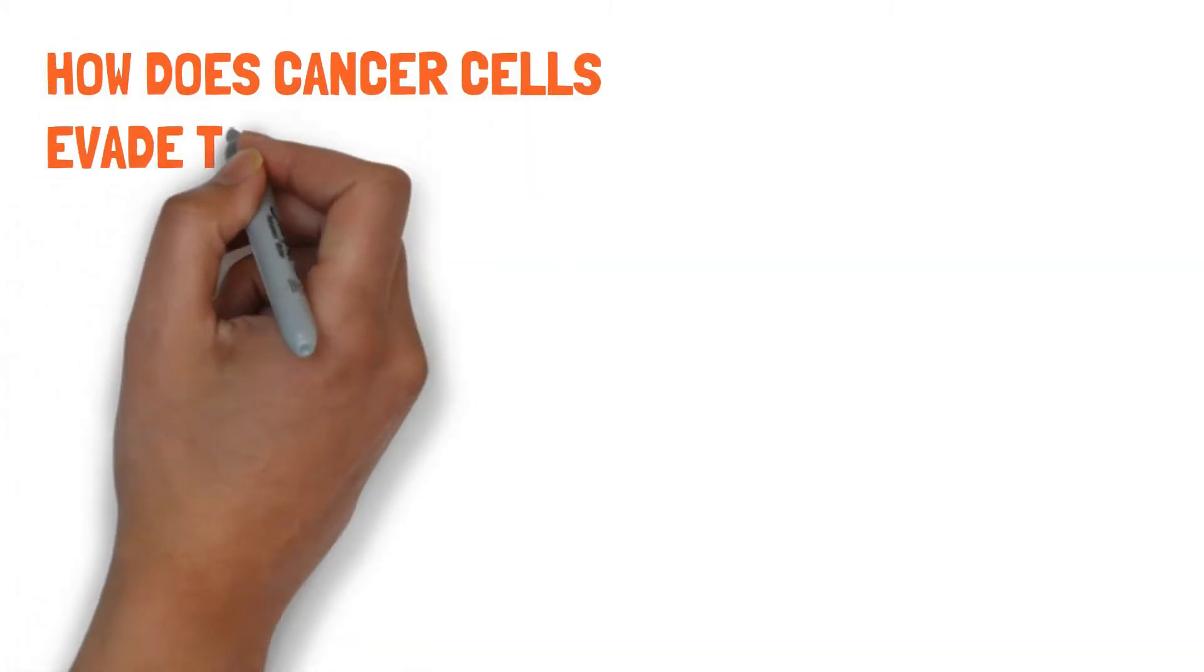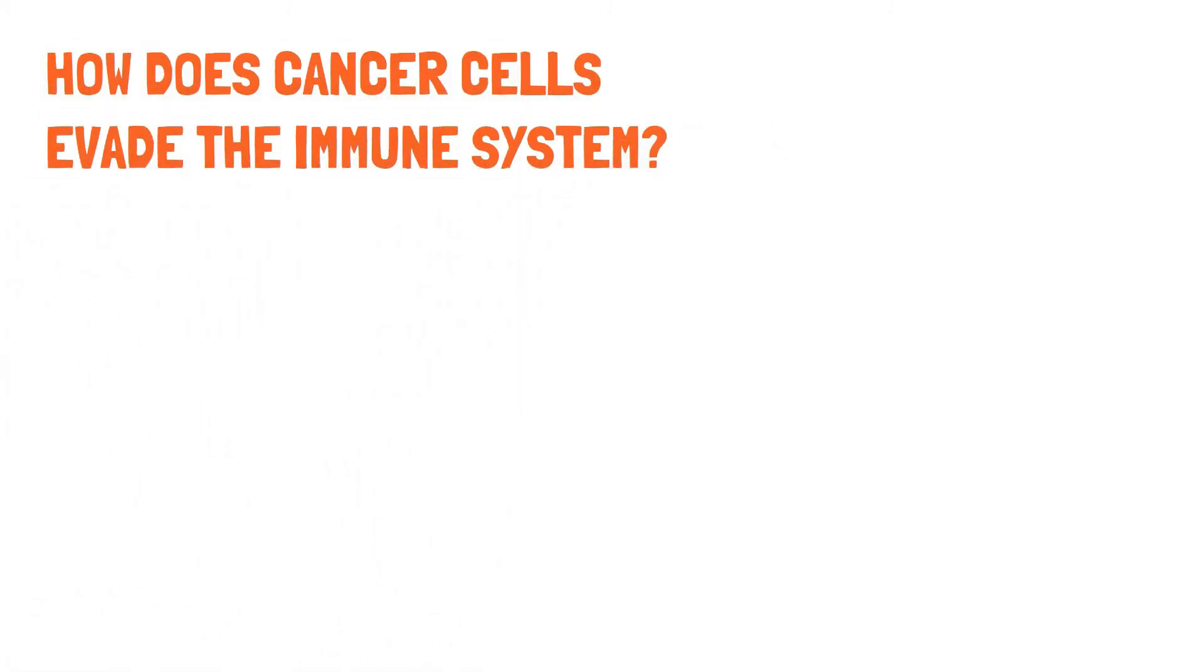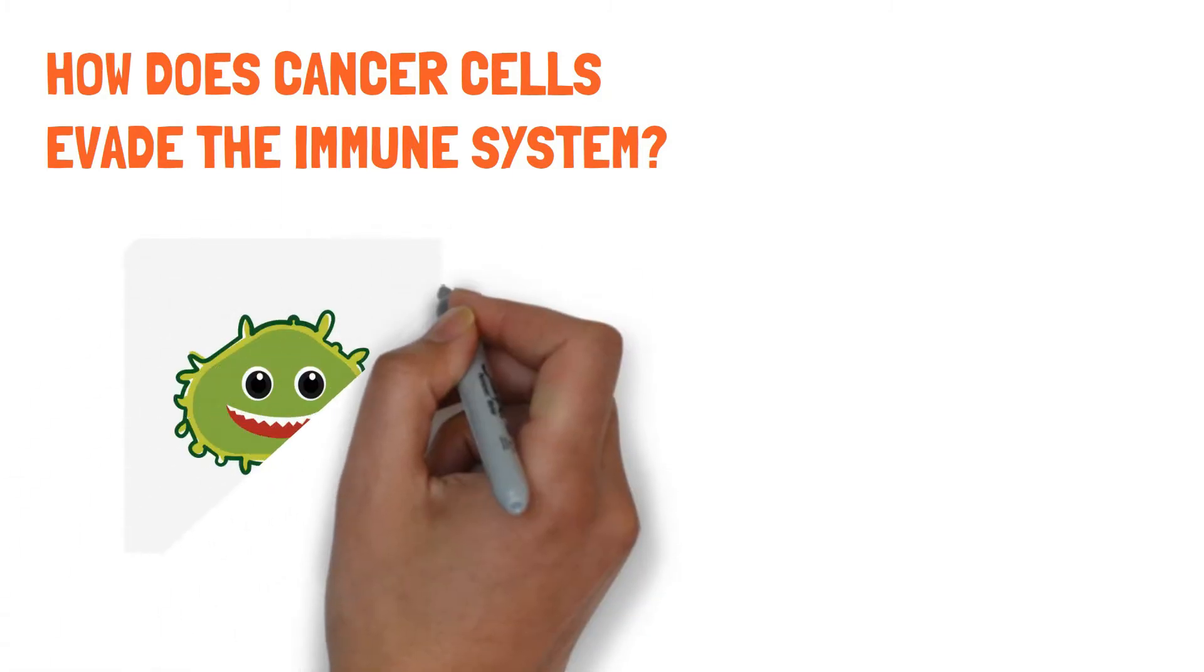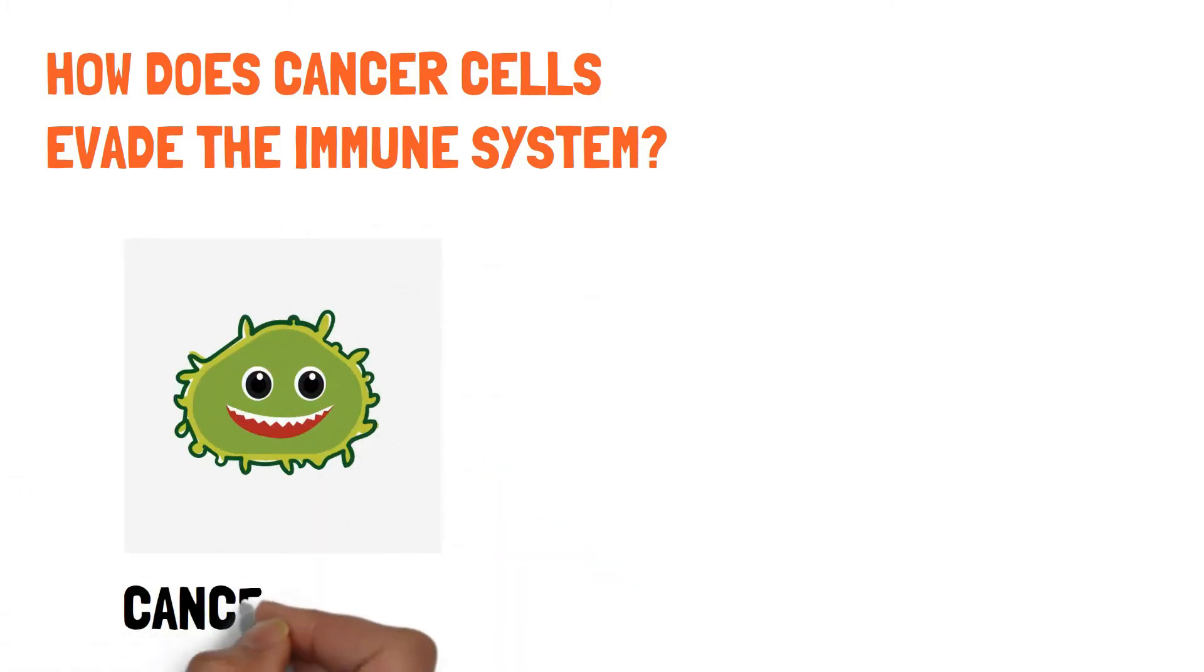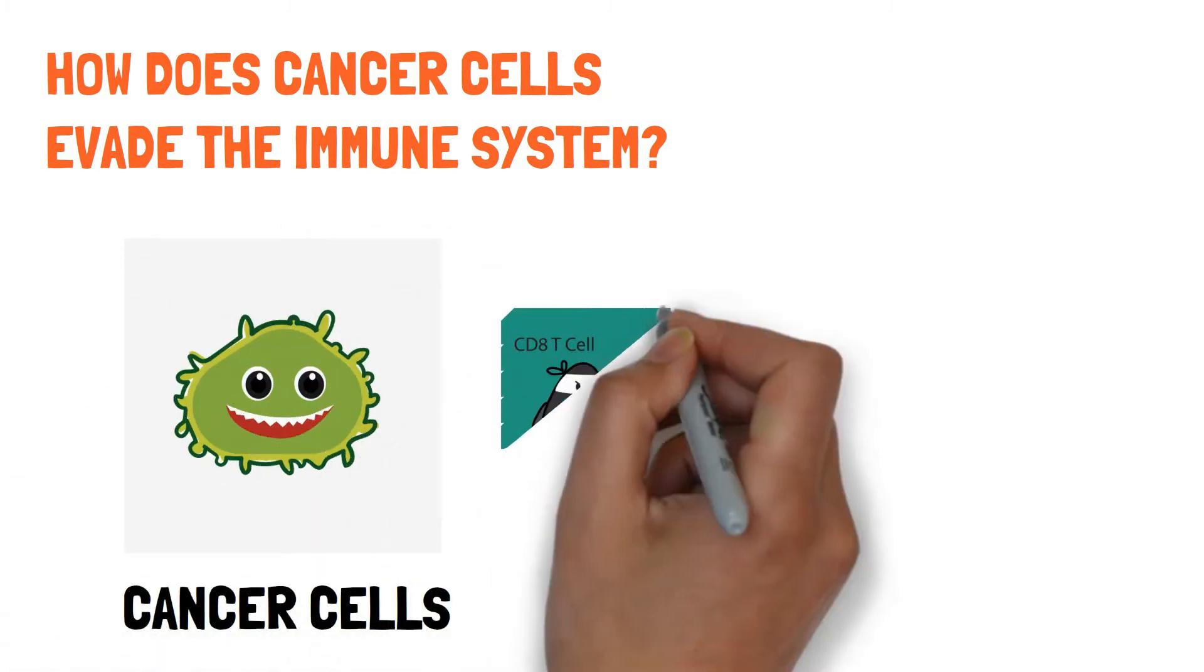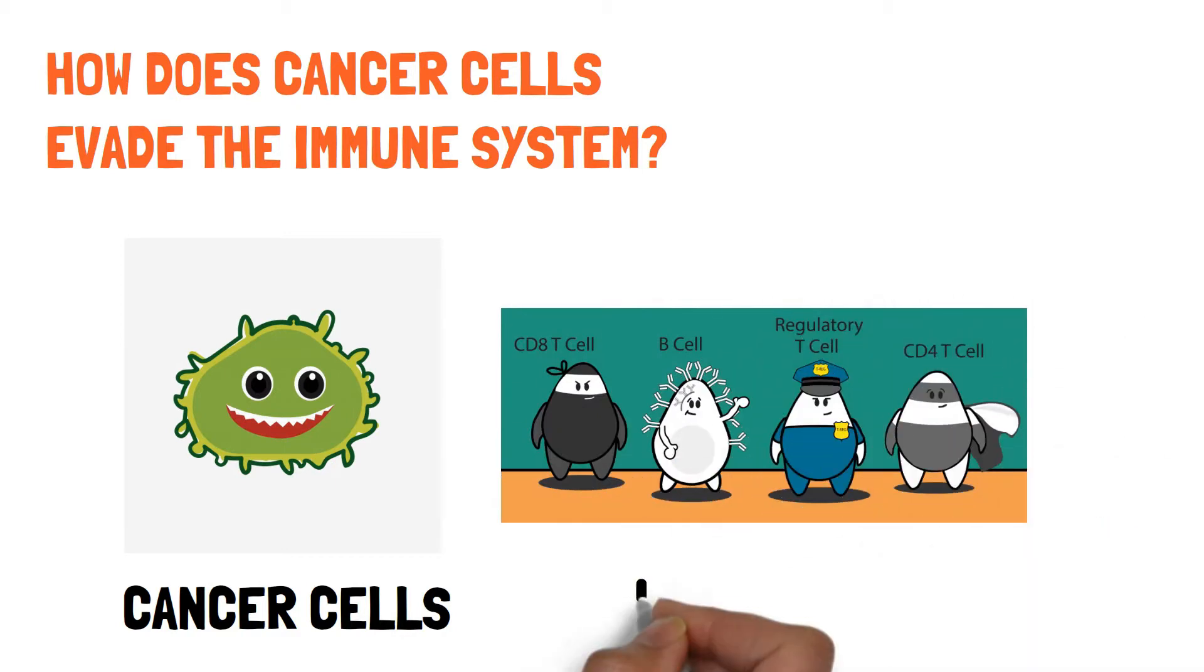So how does the cancer cells evade the immune system? How can the immune system being so accurate miss these cancer cells in the body and they keep on dividing?